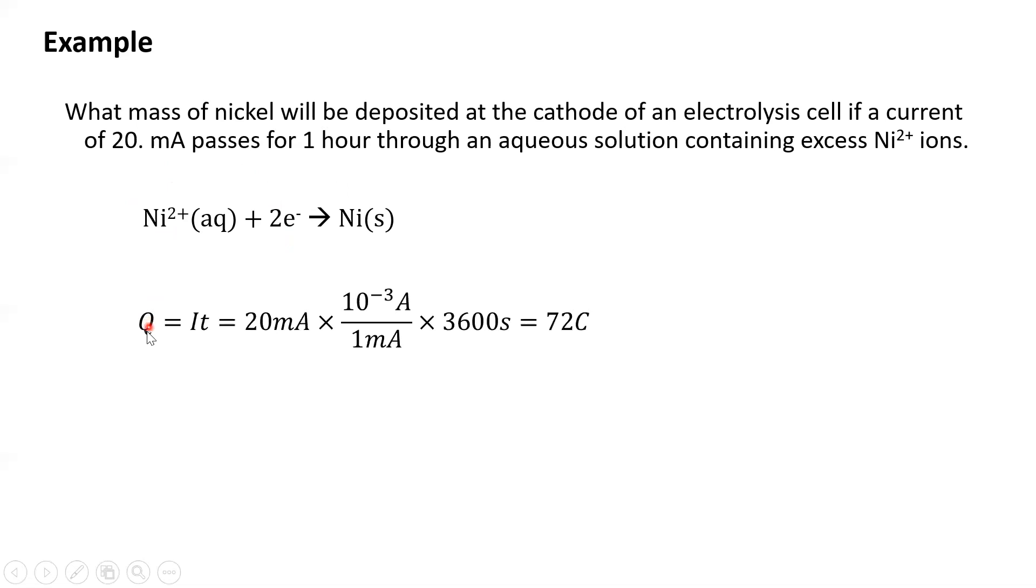And we know that our charge equals our current times our time. The current is 20 milliamps. Well, we can convert milliamps to amps, the same way we could convert like milliliters to liters. One milliamp equals 10 to the minus three amps. So here's our current in amps. We multiply it by our time in seconds. One hour equals 3600 seconds. So our charge is 72 Coulombs.